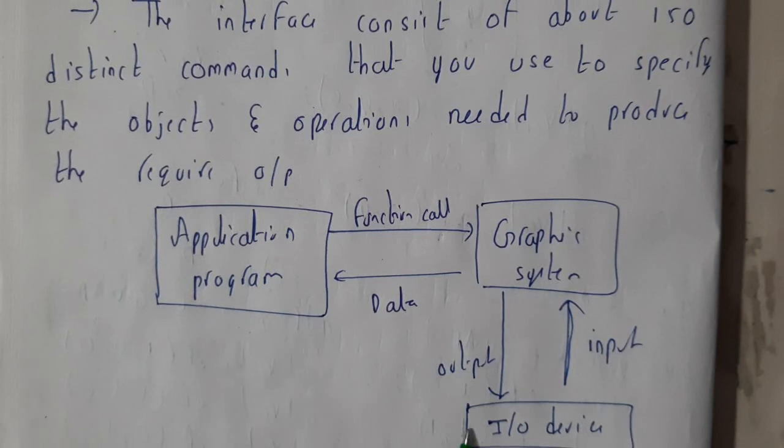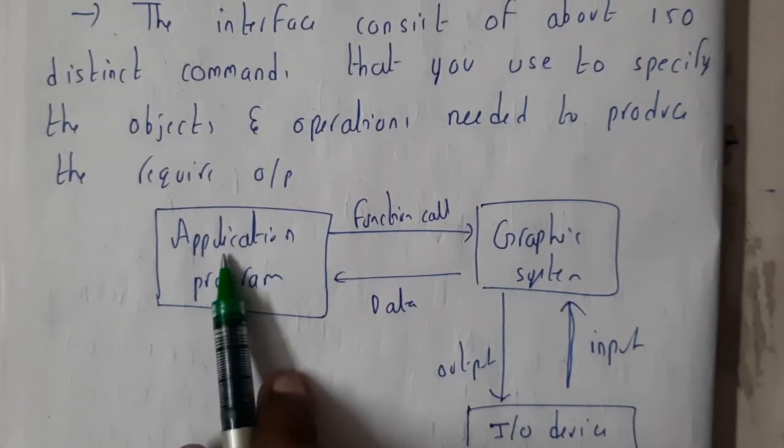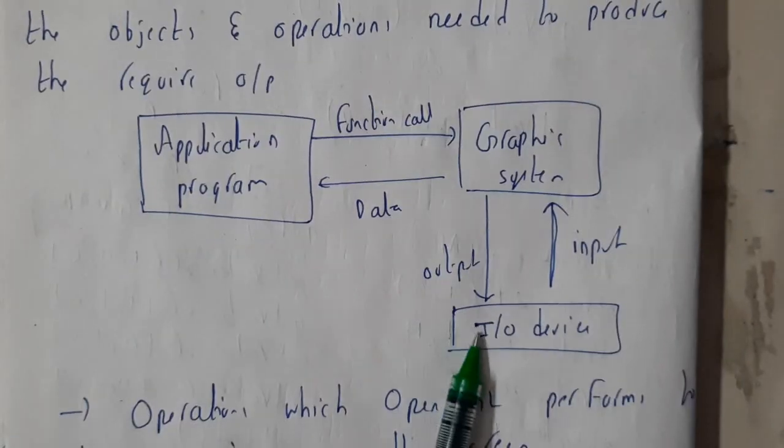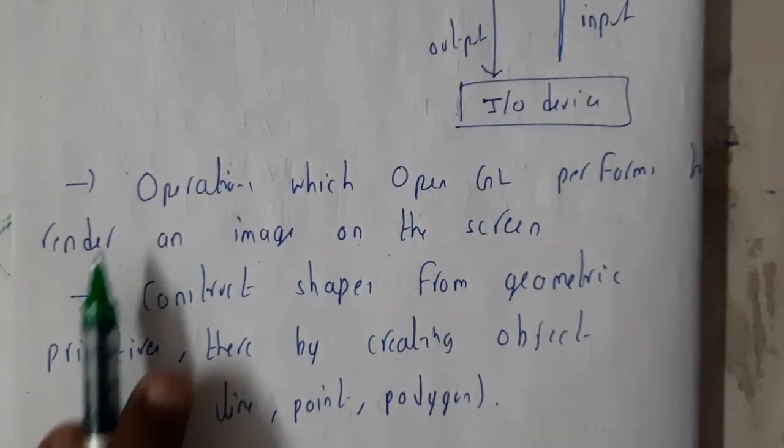In this way, the input/output devices give input, the graphical system searches for data, and the application returns the function calls. It executes them and displays the output. This is how it works. Now, the operations which OpenGL performs to render the image on the screen.